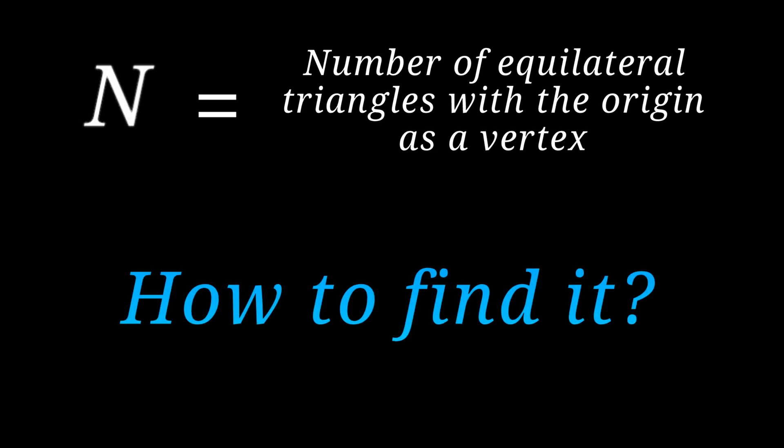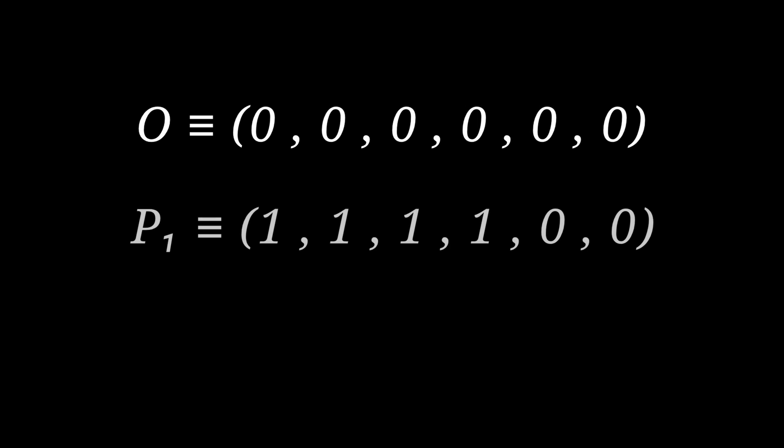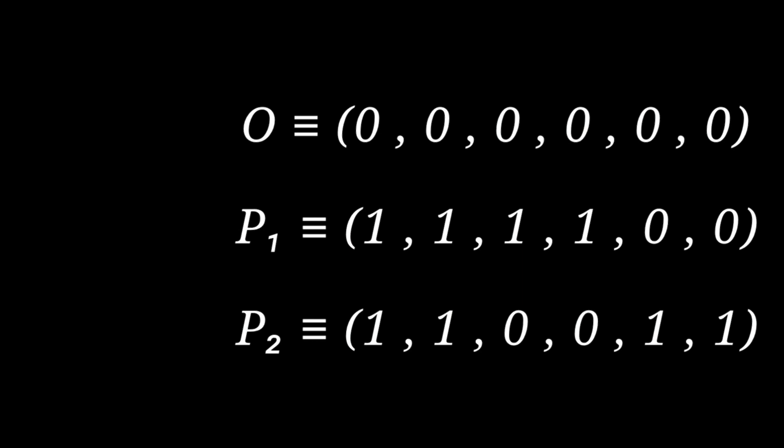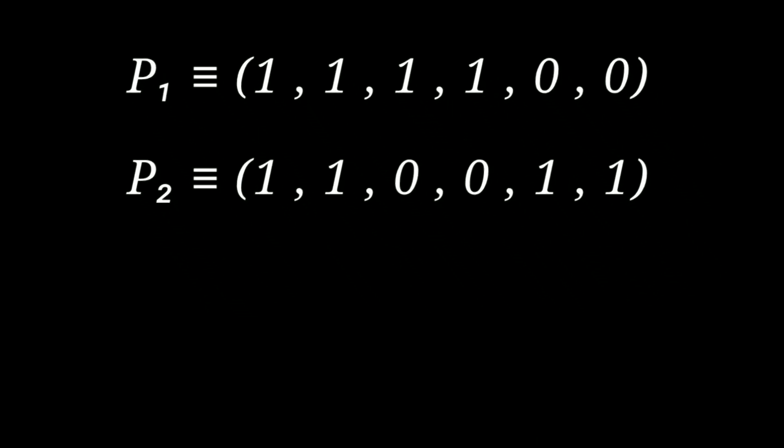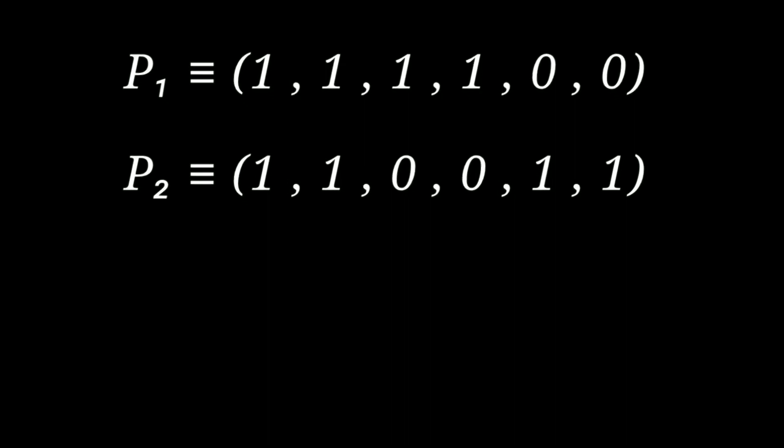Now, the question boils down to simply finding N. Let's try to answer this question with an example. One thing you may notice is that p1 and p2 have the same number of 1s in their coordinates. Can you think of why that is?